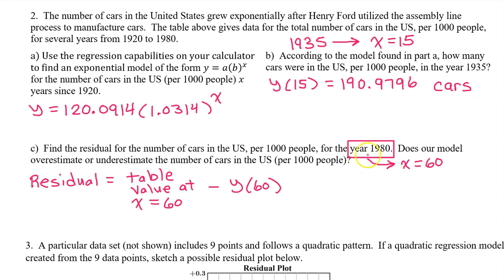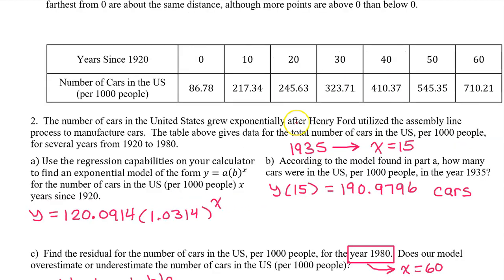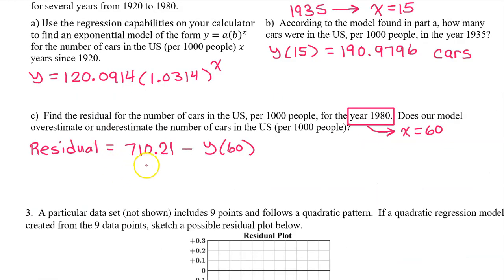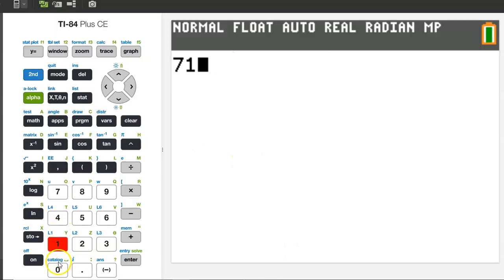The residual value for the year 1980 will be the table value at x = 60 minus y(60). The table value is 710.21. We don't want to lose any decimal accuracy, so let's type this expression into the calculator.